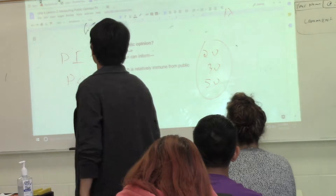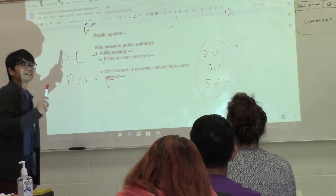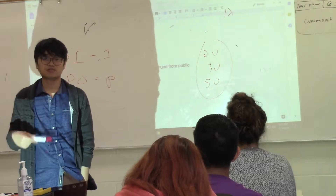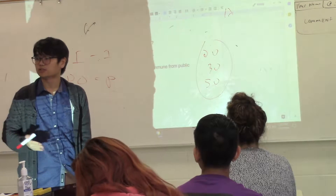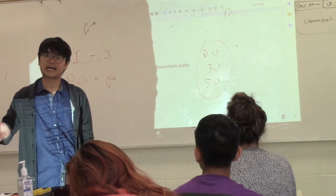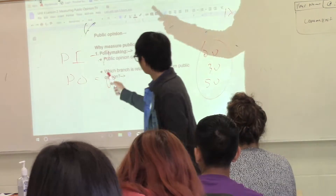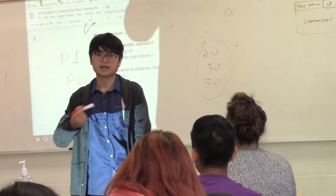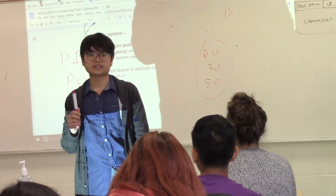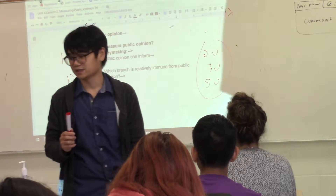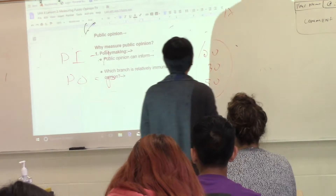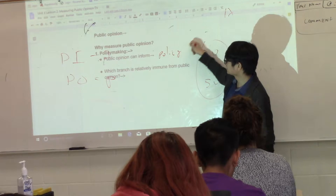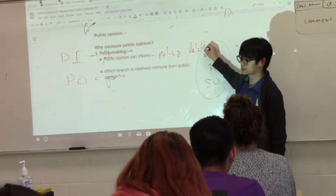Why do we measure public opinion? Because policy making should be guided by public opinion. We are a democracy, and our politicians and representatives, when they're making policy, look at public opinion and use that as a guide. We care about public opinion because policy making is affected by it. Public opinion can inform policy debates in government — that's an important thing that will be on your test.